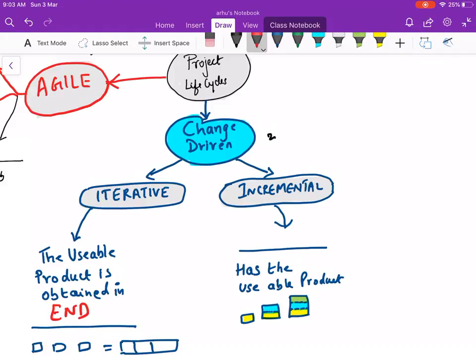Another one is incremental. So each increment has the usable product. You see the base yellow color is there in everything. The next increment, this is the first increment, second increment, third increment. So the increment is this blue color over here, this is the green color in the phase three. So each increment has a usable product, so that becomes an incremental life cycle.